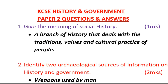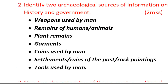Question one: give the meaning of social history. Social history is a branch of history that deals with the traditions, values, and cultural practices of a people. Question two: identify two archaeological sources of information on history and government. Answers include weapons used by man, remains of humans or animals, plant remains, garments, coins used by man, and settlements or ruins of the past.